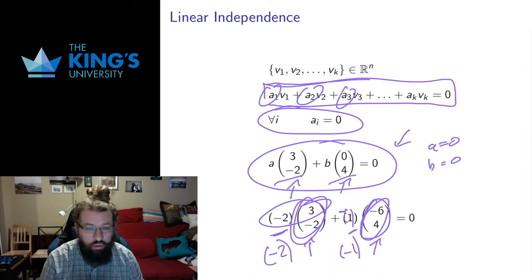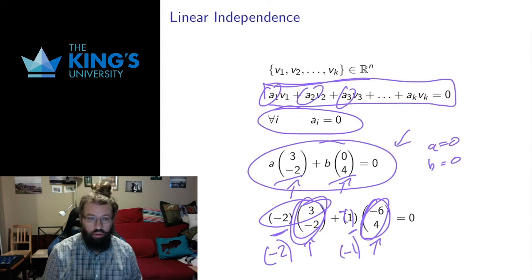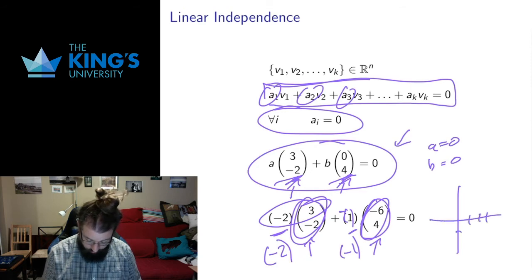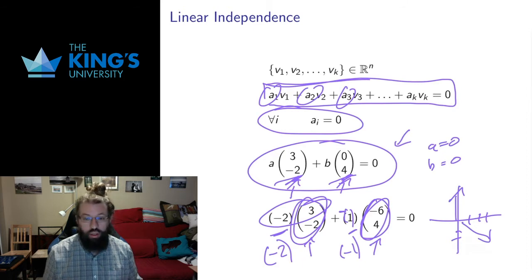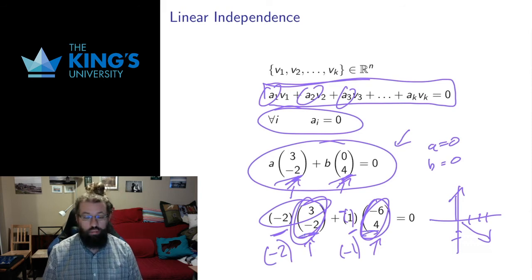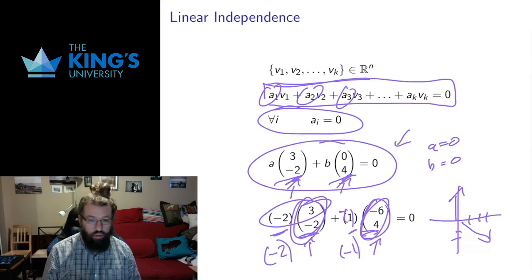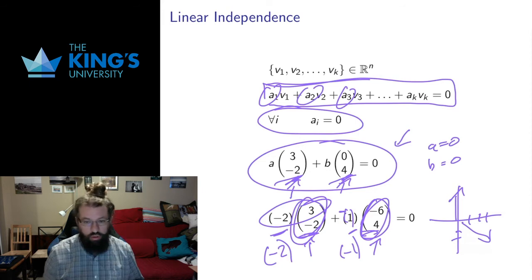I said this was a weird technical algebraic definition — let me give you a geometric notion as well. The geometric notion of linear independence is that the vectors point in fundamentally different directions. These two vectors (3, -2) and (0, 4), if I drew them in the plane, they're pointing in essentially different directions — they don't really share a direction. Whereas the vectors (3, -2) and (-6, 4) would actually lie on the same line. Vectors which are linearly independent all point in fundamentally a new direction, and that applies in any dimension. If you have five linearly independent vectors in R5, those five vectors point in fundamentally different geometric directions in five-dimensional space. It doesn't have to be perfectly perpendicular — they can be at an angle to each other, but they're not in the same line or sharing common directions.